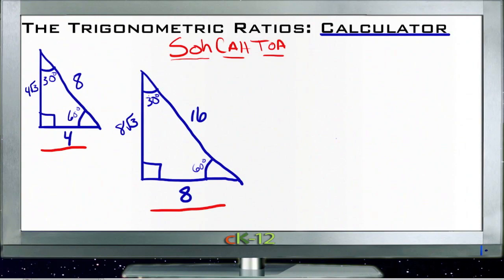If we take a look at this 60-degree angle here and find the sine of that 60-degree angle, sine means we take the opposite side divided by the hypotenuse. The opposite side of the 60-degree angle would be 4√3 and the hypotenuse would be 8. So the sine of our 60-degree angle is 4√3 divided by 8, which reduces to √3 over 2.